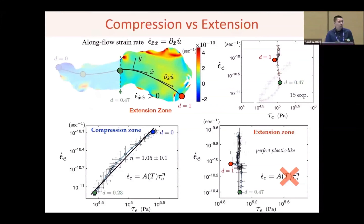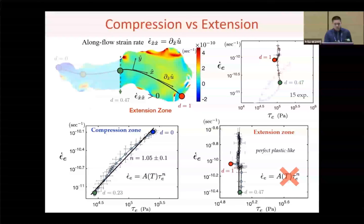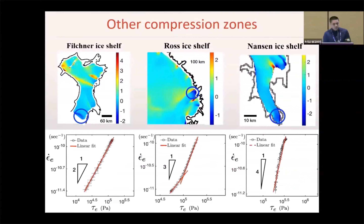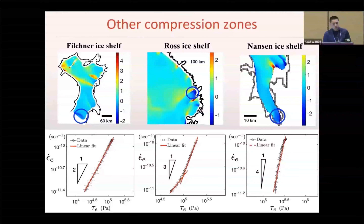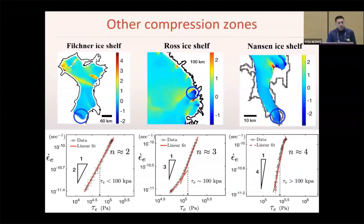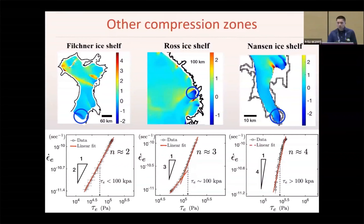To confirm this finding is robust, we detect and analyze the compression zones on many other ice shelves surrounding Antarctica. All of them show clear power law relations. In addition, we find that the power law exponent also follows clear patterns, increasing with stress.